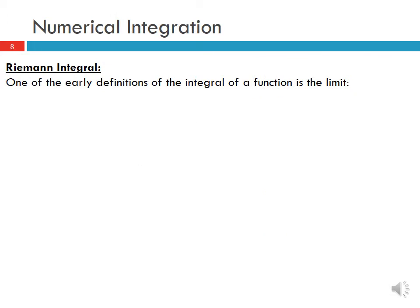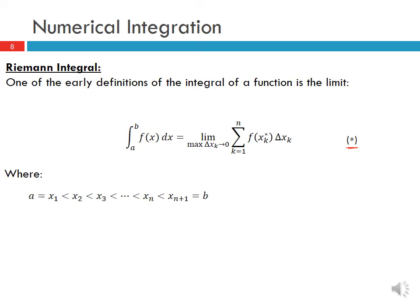One of the early definitions of the integral of a function is known as the Riemann integral. The integral from a to b of f(x) dx equals the limit as the maximum delta_k goes to 0 of the sum from k=1 to n of f(x_k*) times delta x_k. Here, points x_1, x_2, x_3 up to x_{n+1} are between a and b, where a = x_1 and b = x_{n+1}. Delta x_k is the difference between x_{k+1} and x_k, and x_k* is an arbitrary point within the interval from x_k to x_{k+1}.